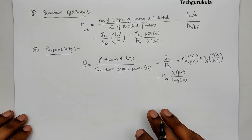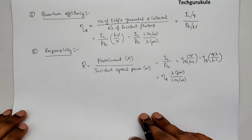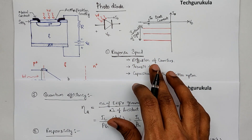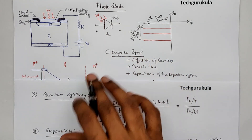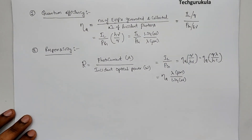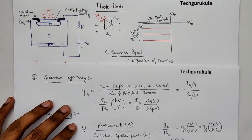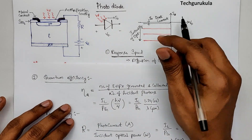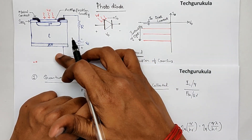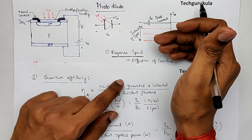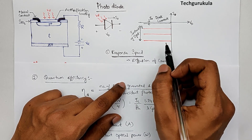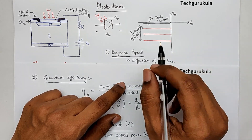So these are the three important parameters we have seen: response speed, quantum efficiency, and responsivity. At times, if we have to detect light that is very low in intensity, we cannot use simple PIN diodes. Instead we use diodes called APDs — Avalanche Photo Diodes. These diodes are operated near the avalanche breakdown region where we have carrier multiplication. So the same PIN diode can be operated as an Avalanche Photo Diode.